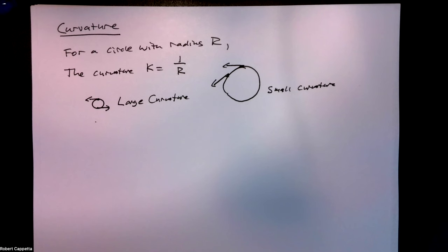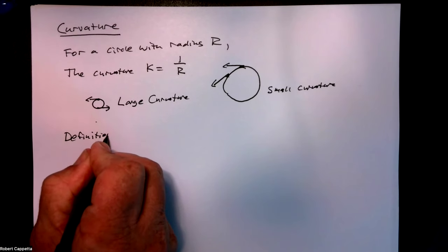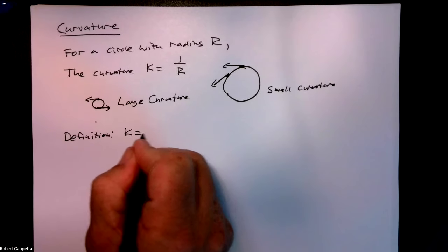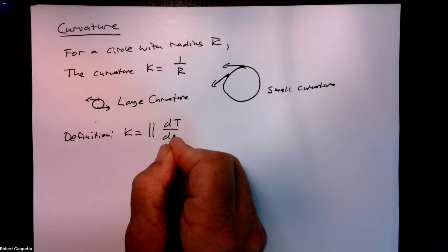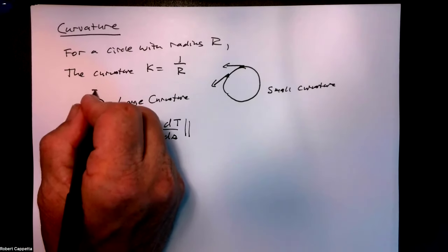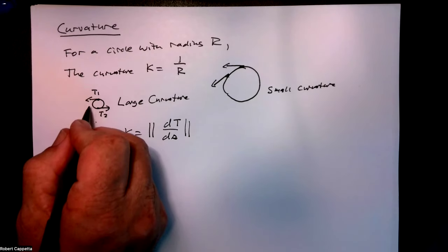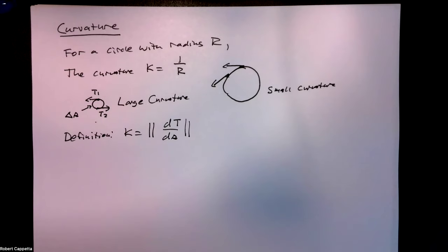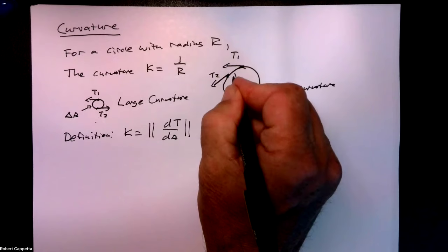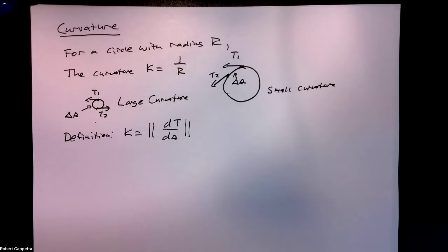So curvature, in essence, measures how fast the thing is turning. The actual definition: curvature is the magnitude of dT/ds. We can see here t1 and t2, so the change in T would be t2 minus t1. The arc length as I move from this point to this point is the change in s. I tried to keep about the same change in s to look at different situations in terms of how they behave when measuring curvature.